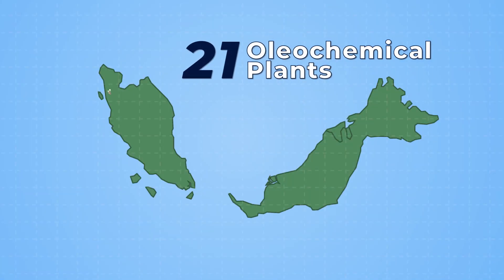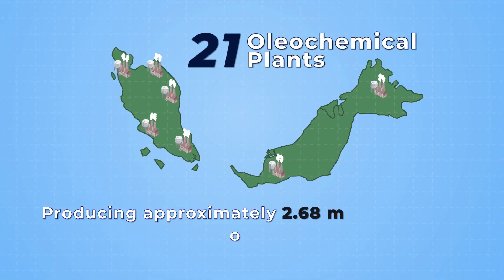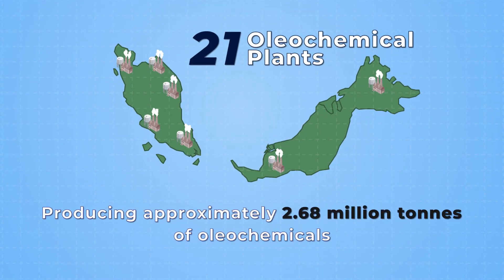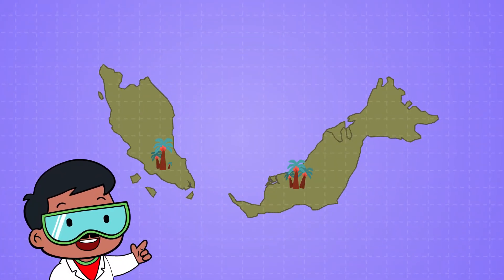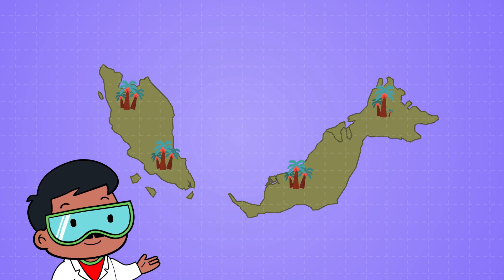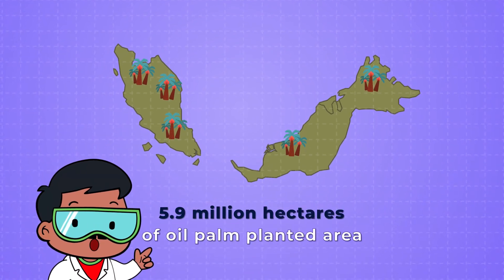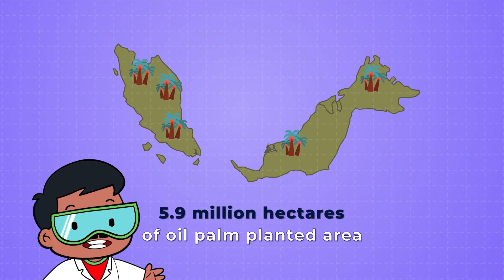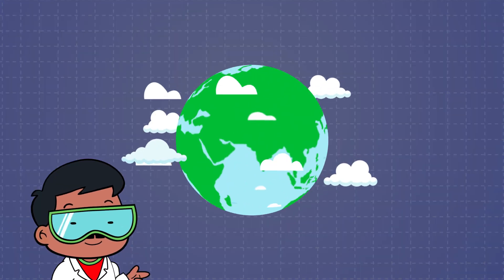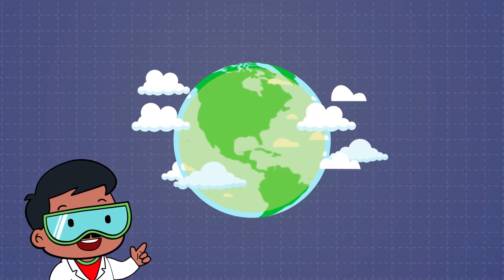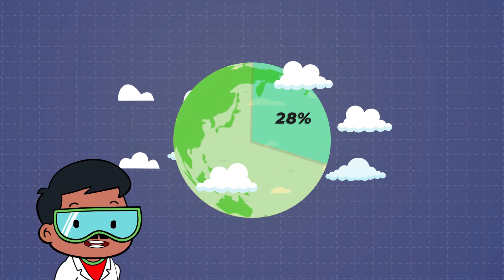Currently there are more than 21 oleochemical plants in Malaysia producing approximately 2.68 million tons of oleochemicals. In 2020, Malaysia had 5.9 million hectares of oil palm planted area, yielding 28% of global palm oil production.